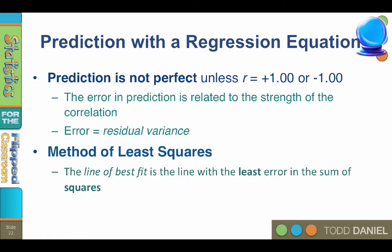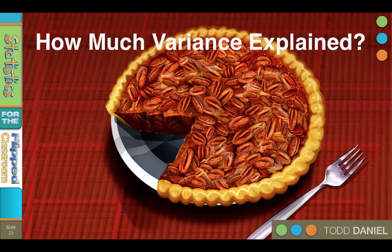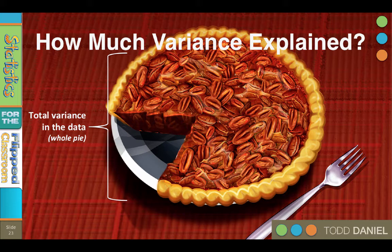Think of all of the variance in the model as a pie — a variance pie. The whole pie represents all of the variability in your data. The total variance is made up of variance that you can explain by your general linear model, but some of the total variance is going to be due to residual error or residual variance. Ideally, you want your model to explain all of the variability in the data and get the whole pie. But in the real world, just like having a little brother, somebody got to the variance pie before you did — somebody called error. And error ate up part of the variance pie.